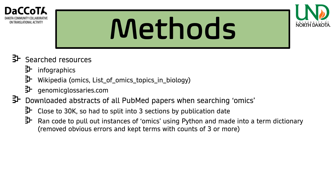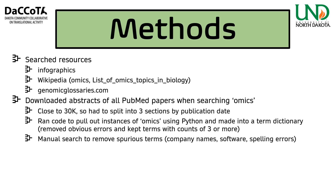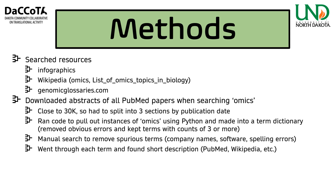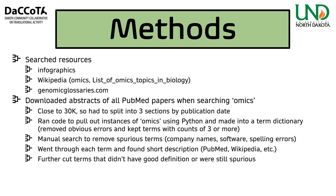I ran Python code to pull out instances of omics, turning them into a term dictionary, then went through and removed obvious errors, keeping only terms with counts of three or more. I did a manual search to remove spurious terms like company names, software, or spelling errors. Each term was given a short description from PubMed, Wikipedia, or wherever available. The final list contained 255 items.